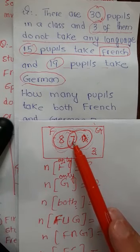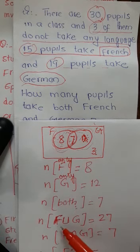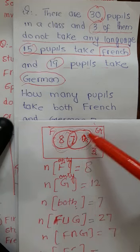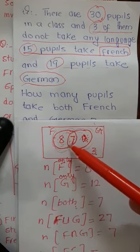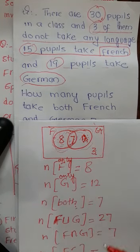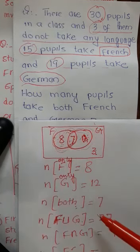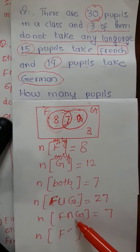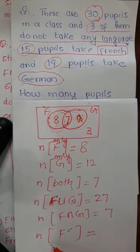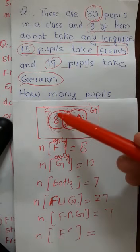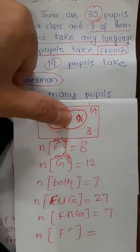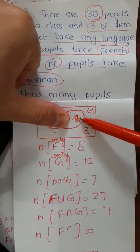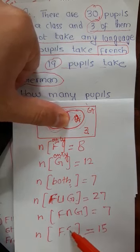If we want to know the number of students studying both languages, there are 7 — the intersection part of French and German. The number of students in F union G means all of complete F and complete G: 8 plus 7 plus 12 equals 27. The number of students in F intersection G — the common overlapping part — is 7. For F complement, meaning all area other than F, we have 12 plus 3, which is 15 students.